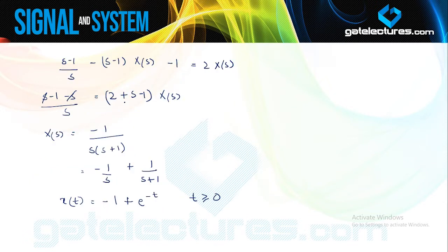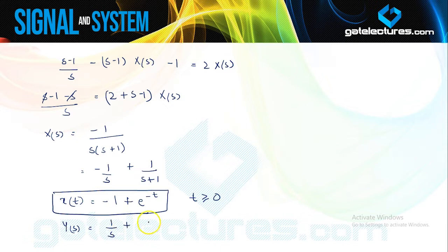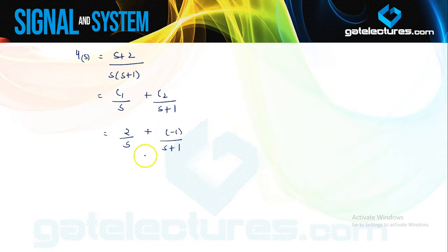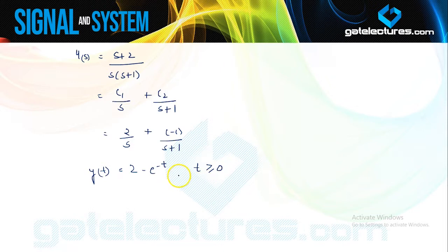Now using Y(s) = 1/s minus X(s) from equation 1 and substituting X(s) = minus 1/(s(s+1)): Y(s) = 1/s + 1/(s(s+1)). Taking LCM gives Y(s) = (s+2)/(s(s+1)). Partial fraction expansion yields 2/s minus 1/(s+1). Taking inverse Laplace: y(t) = 2 minus e to the power minus t for t greater than or equal to 0. This is how two simultaneous equations are solved using unilateral Laplace transform.